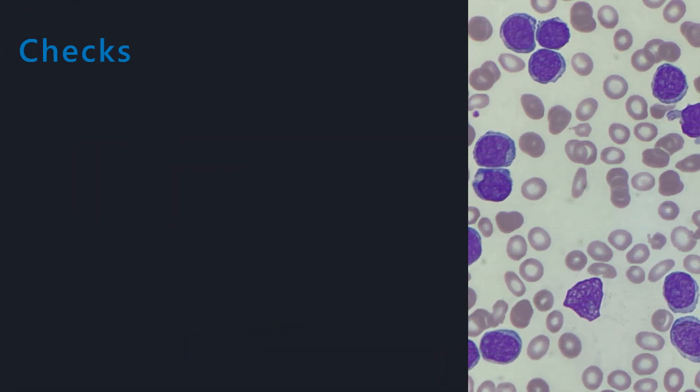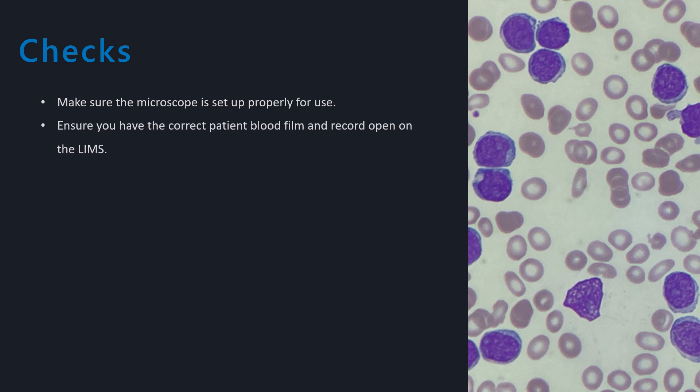Before we actually start the manual differential count, there are a few final things to check. Firstly, ensure that the blood film you're about to look at or perform the manual differential count on is the same as the record you have pulled up on the computer screen. Check the name and the sample identification number.